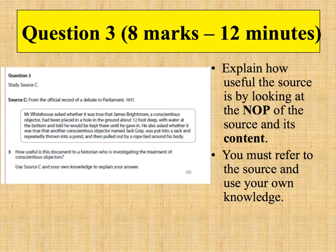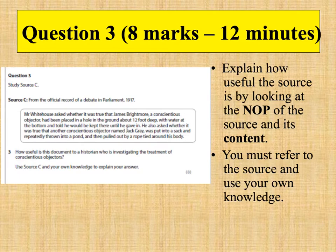Question 3 is worth 8 marks, and you should spend 12 minutes on it. For question 3, you have to explain how useful a historical source, document or picture is to a historian investigating some aspect of history. There are two things to look out for. Firstly, evaluate how useful the NOP of the source is — NOP stands for Nature, Origin, and Purpose. Nature means what type of source it is; origin, who wrote it and when; and purpose, why the source has been written.